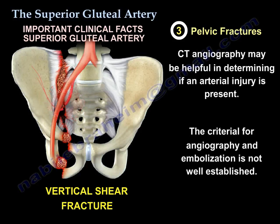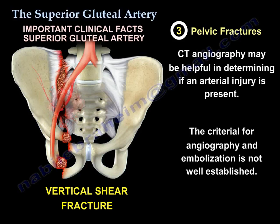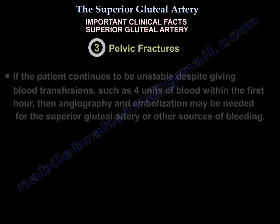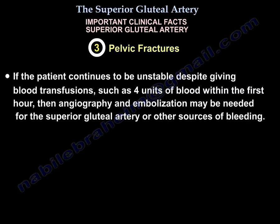CT angiography may be helpful in determining whether an arterial injury is present. The criteria for angiography and embolization of the superior gluteal artery are not well established, but if the patient continues to be hemodynamically unstable despite receiving approximately four units of blood in the first hour, angiography and embolization of the superior gluteal artery or another source of bleeding should be considered.